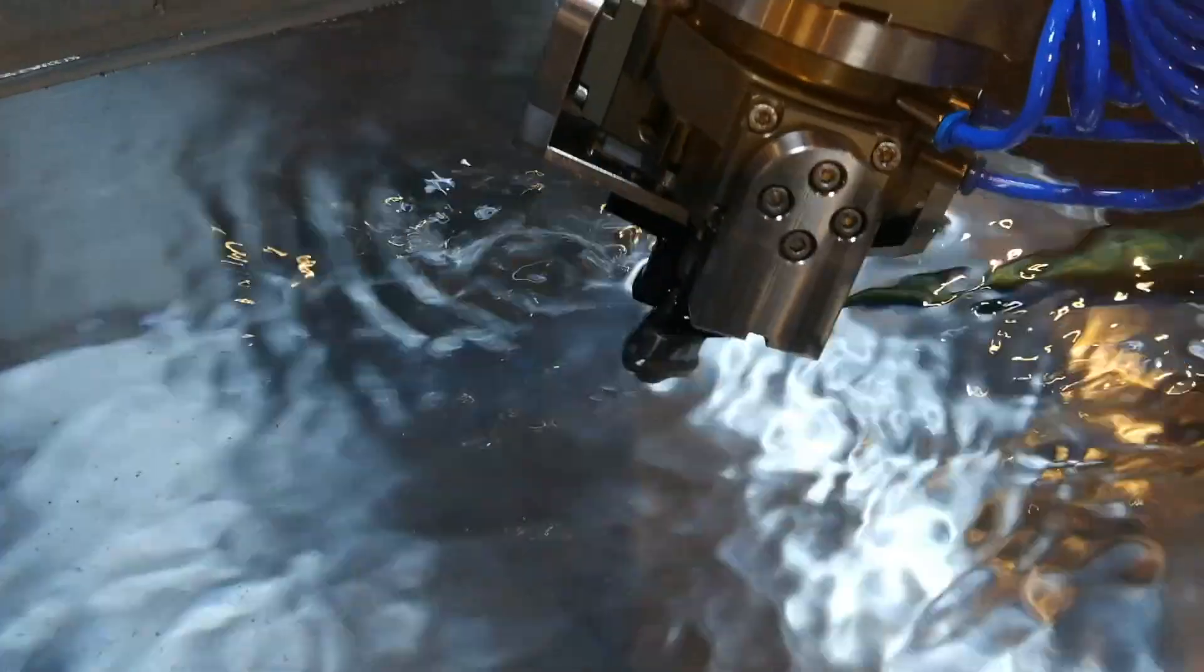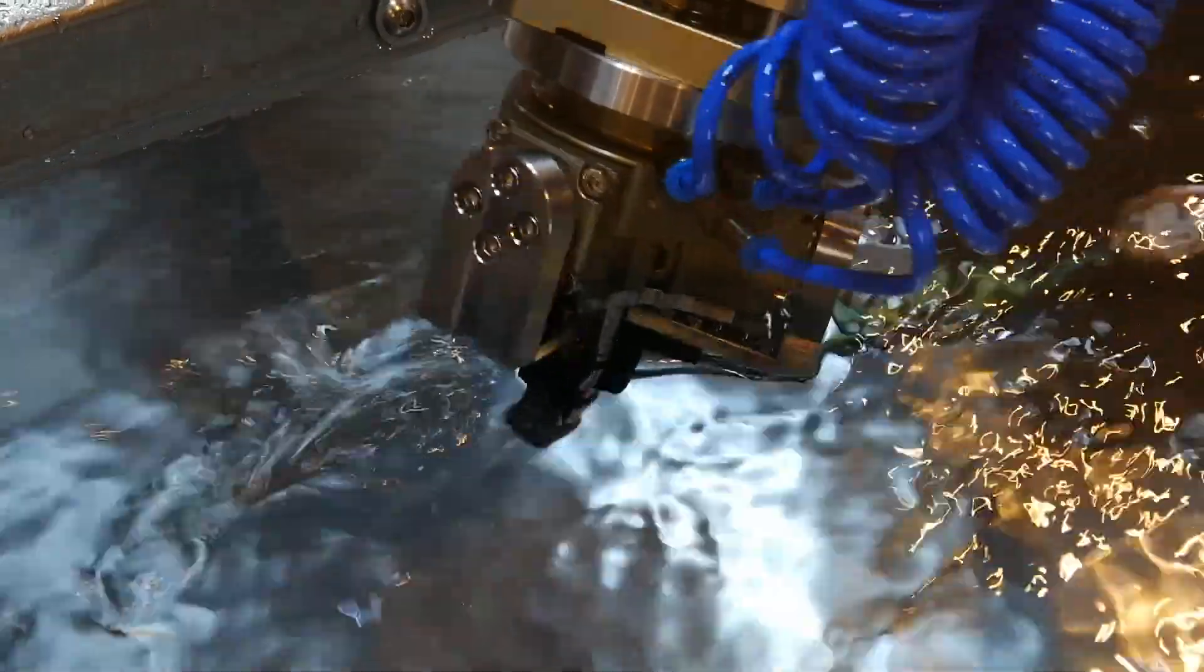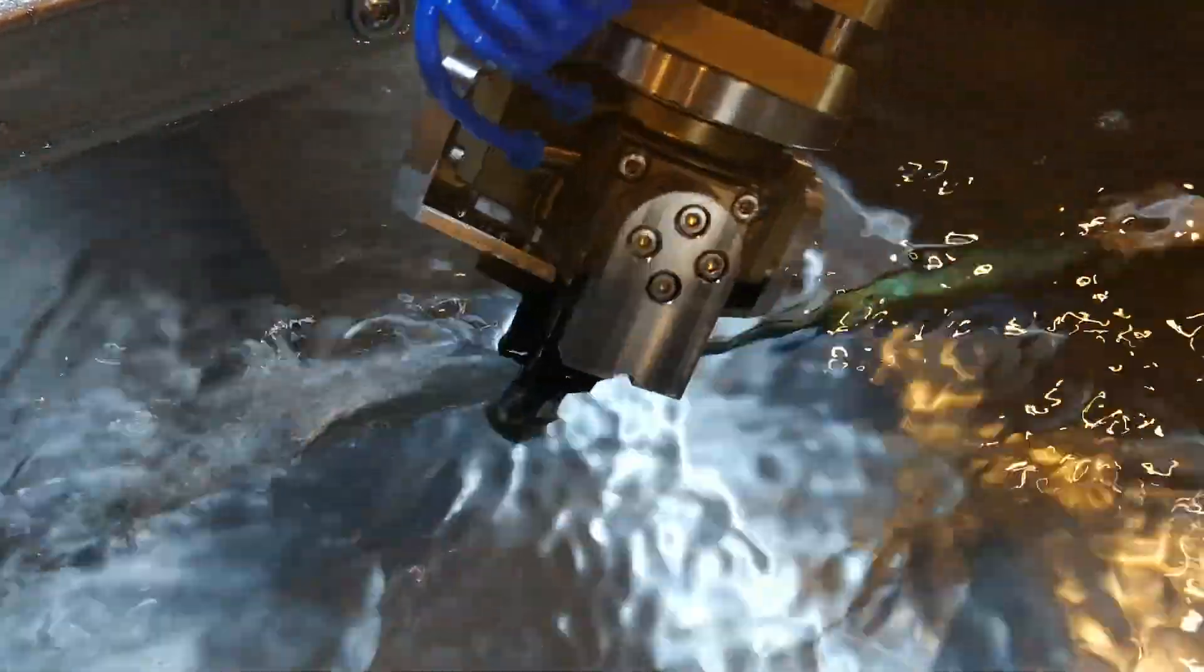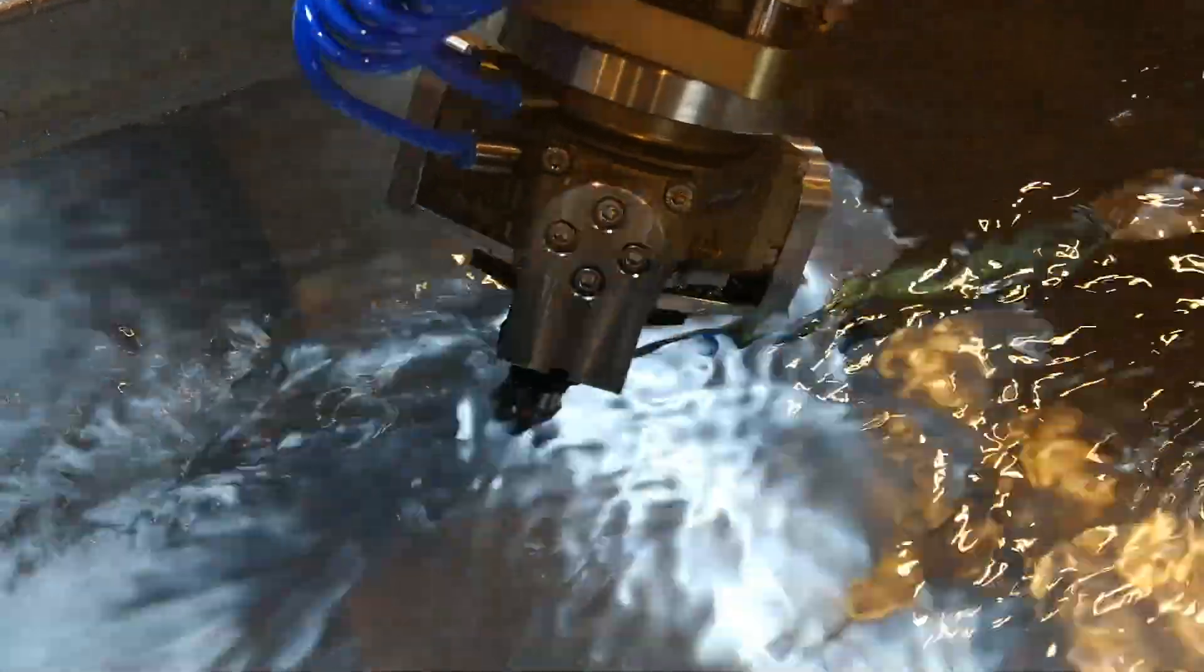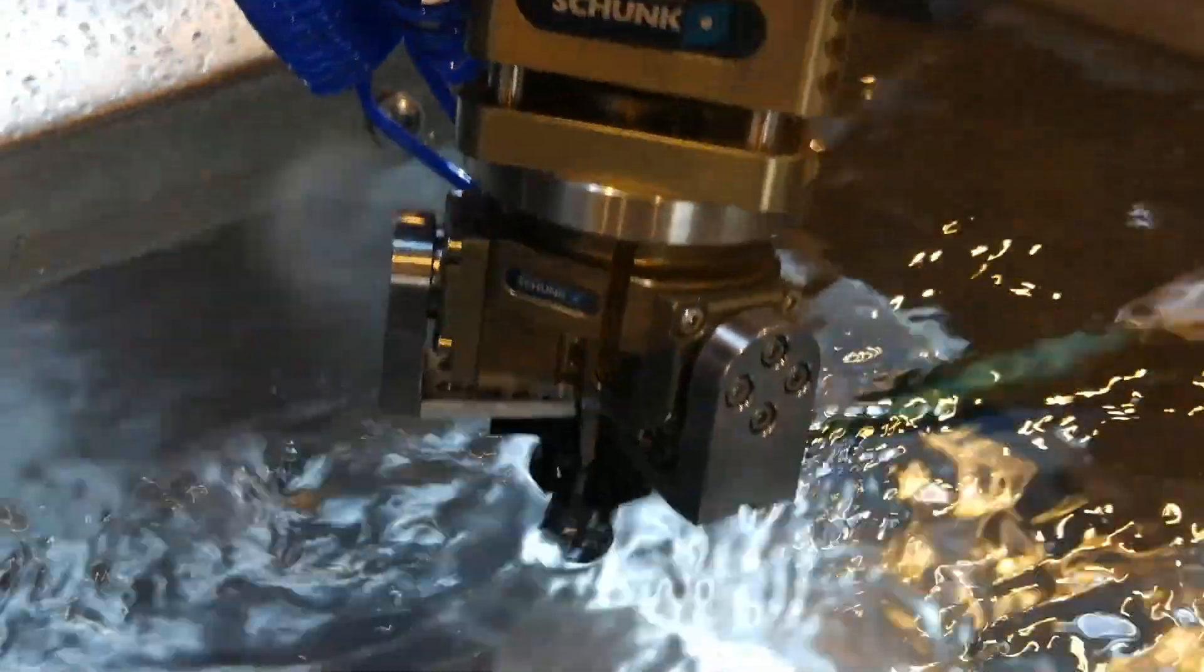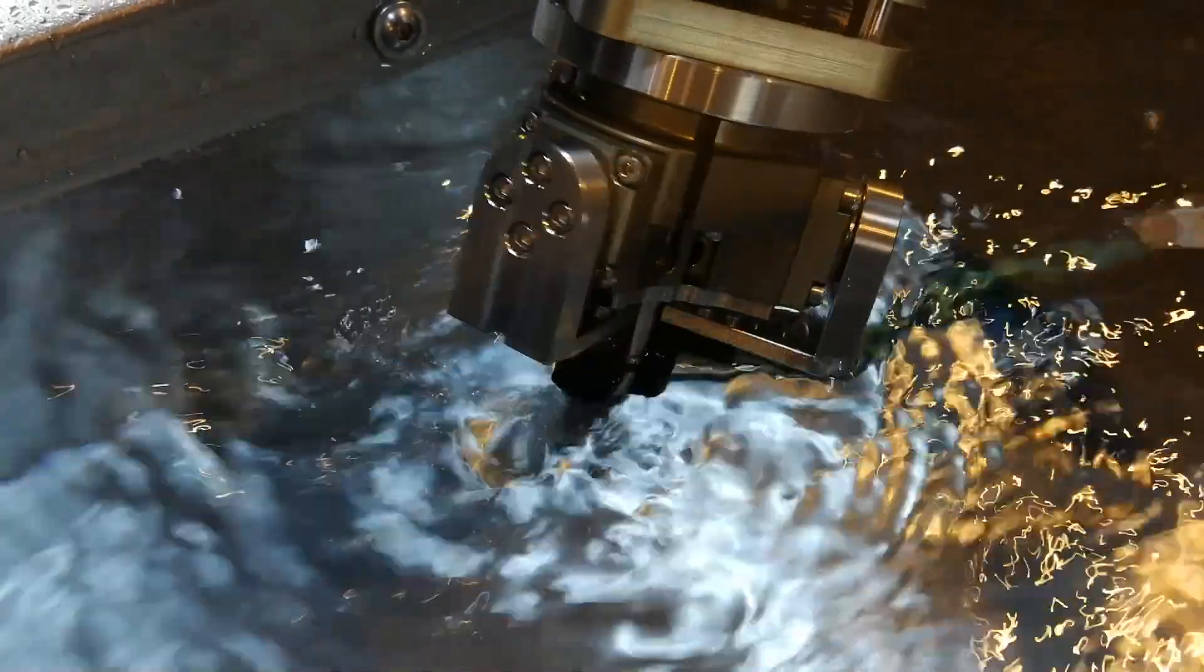The component which needs to be deburred is moved along the tip of the ultrasonic horn at a defined angle and with a very small distance. The burrs are swung open and removed in a process safe manner. This achieves a selective and sharp edge deburring.